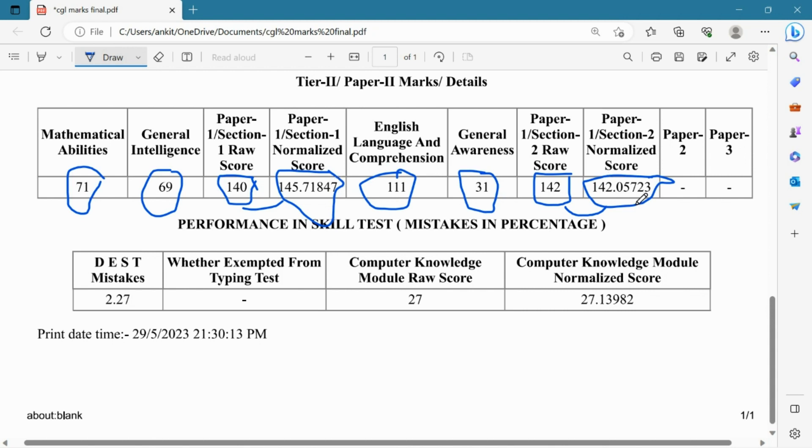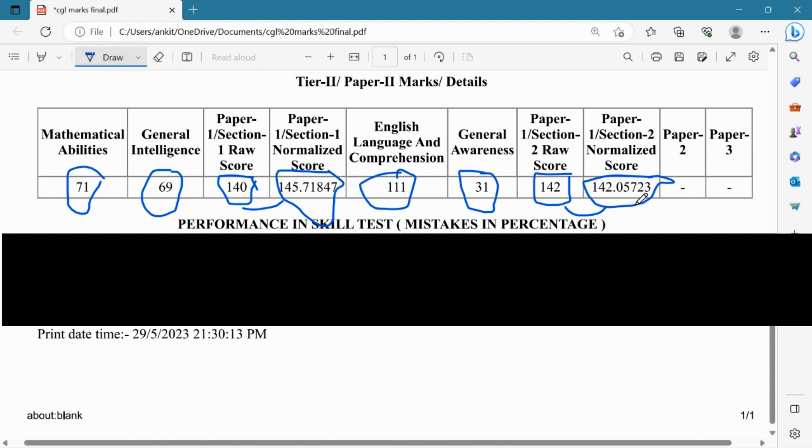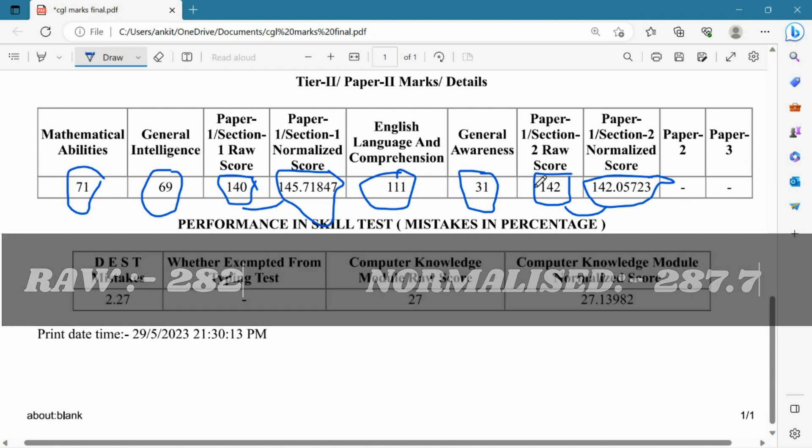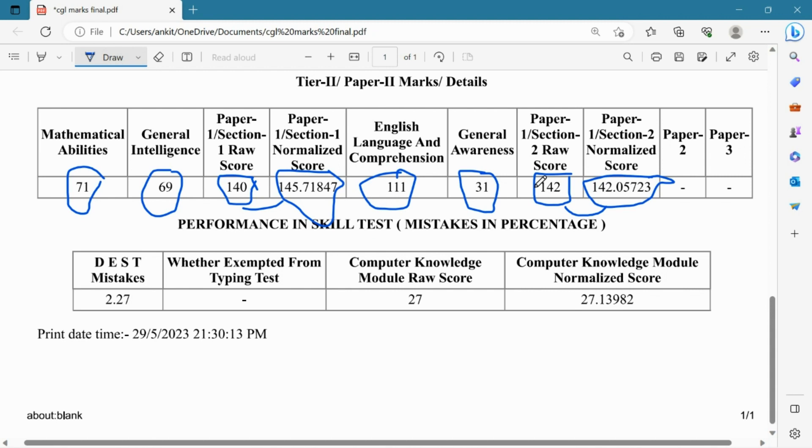The total normalization is 287.7, so that's my final score.